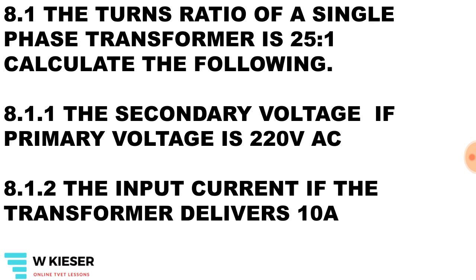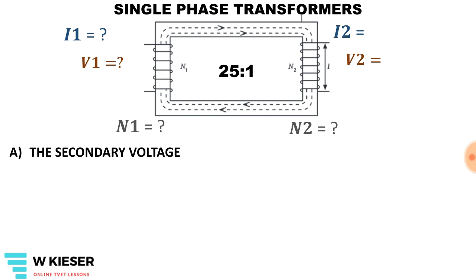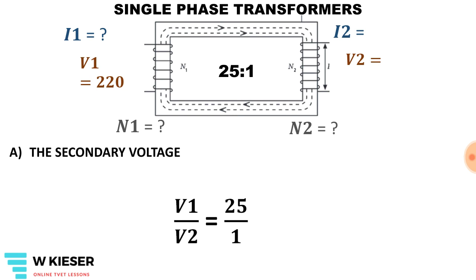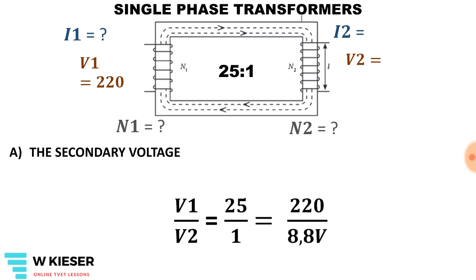Here we have a transformer calculation for single-phase transformers. The turns ratio of a single-phase transformer is 25 to 1, therefore it is a step-down transformer. We need to calculate the secondary voltage if the primary voltage is 220 volts, and also the input current if the transformer delivers 10 amps to the secondary side. Draw your single-phase transformer and note the ratio is 25 to 1. Using the equation V1 over V2, substituting 25 on the primary and 1 on the secondary, with 220 volts on the primary and using cross multiplication, the secondary voltage is 8.8 volts.